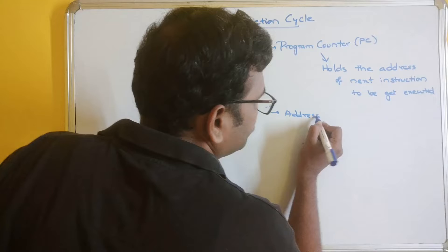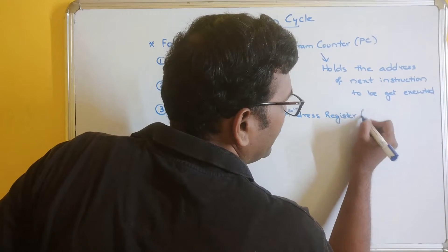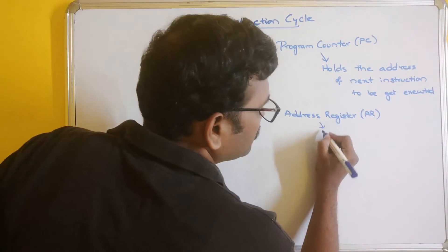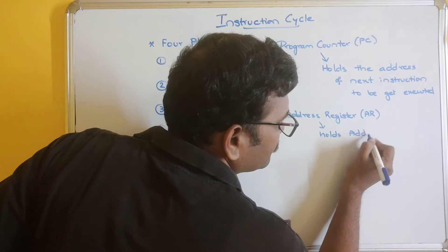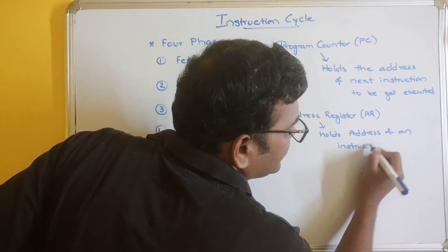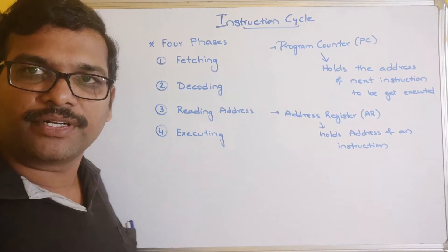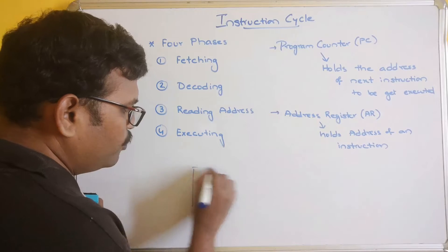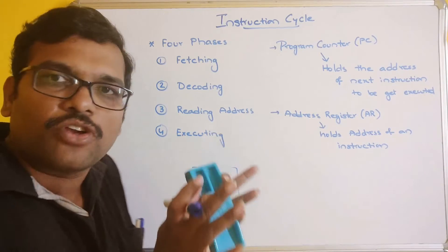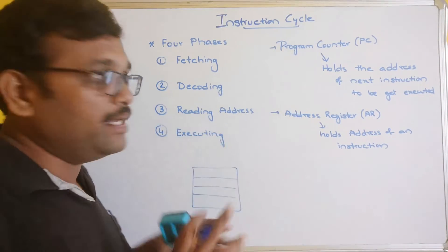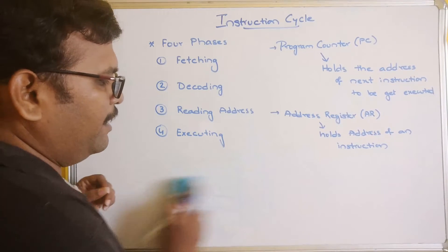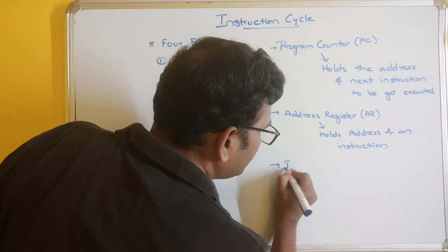The second concept is the address register, usually called AR. As the name itself indicates, this is a register which holds the address of an instruction. In memory, instructions are saved at specific addresses, and those addresses are stored in the address register.